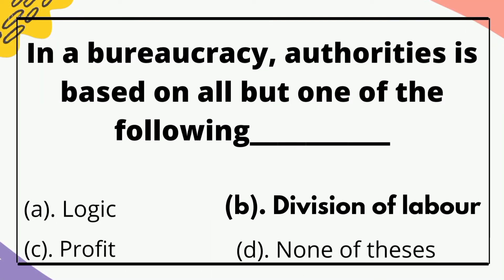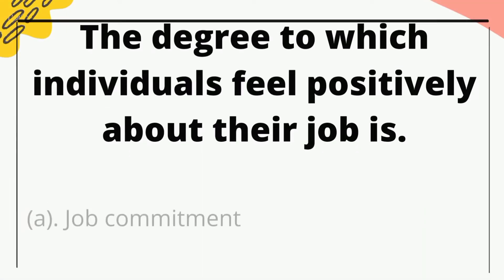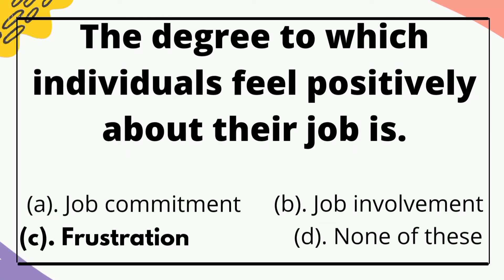In bureaucracy, authority is based on all but one of the following — the correct option is division of labor. The degree to which individuals feel positively about their job — the correct option is frustration.